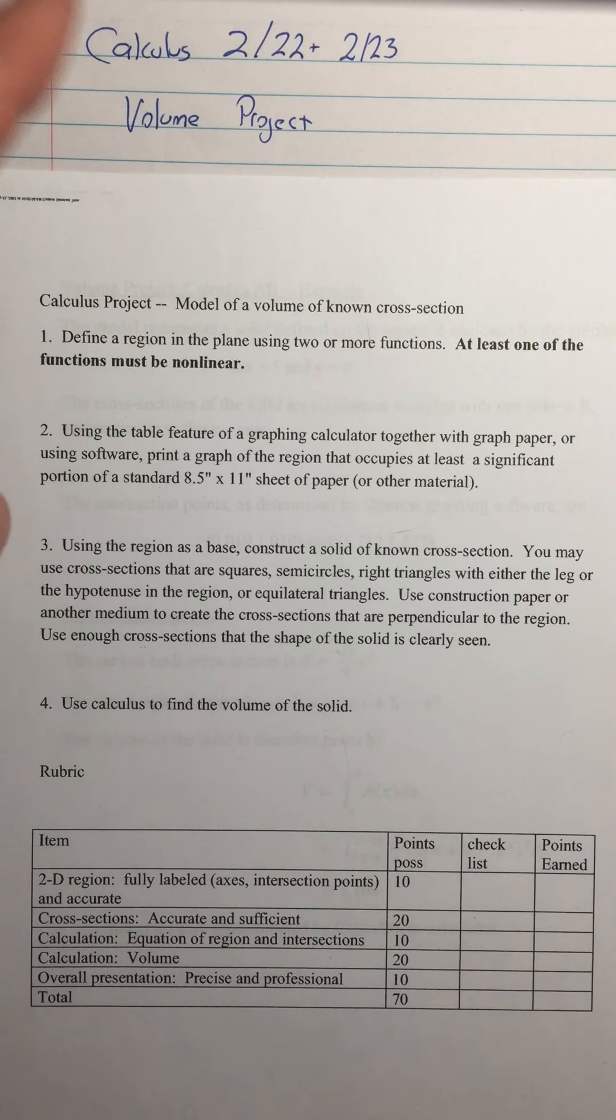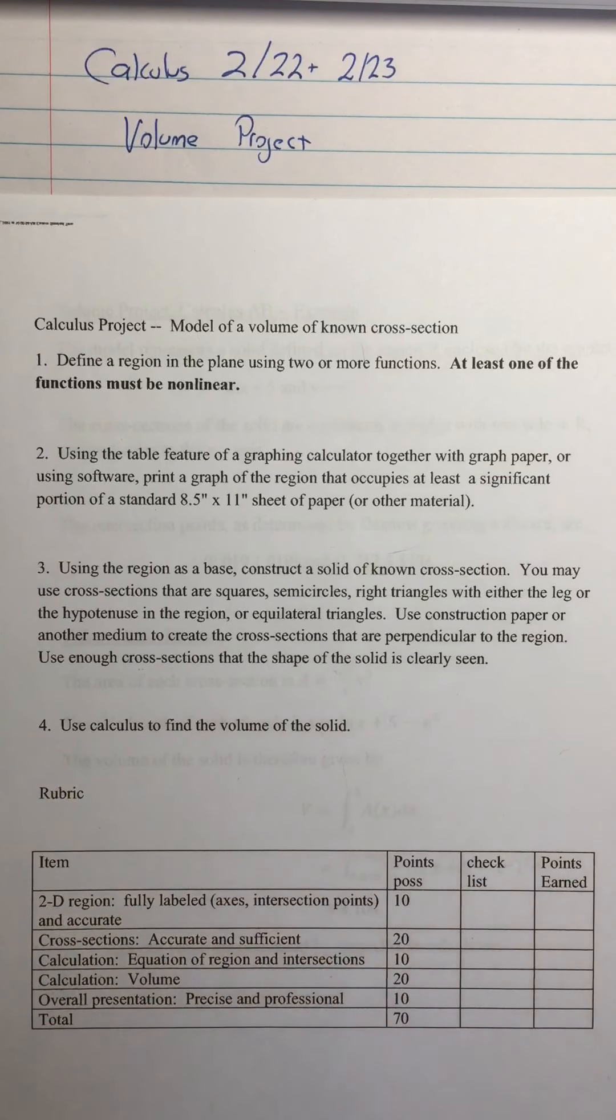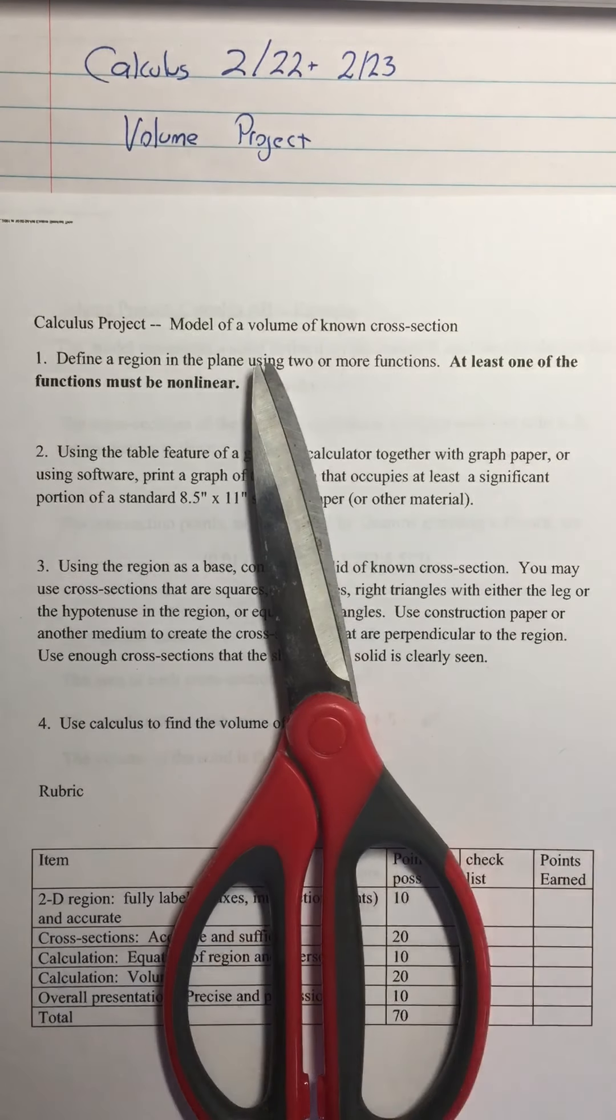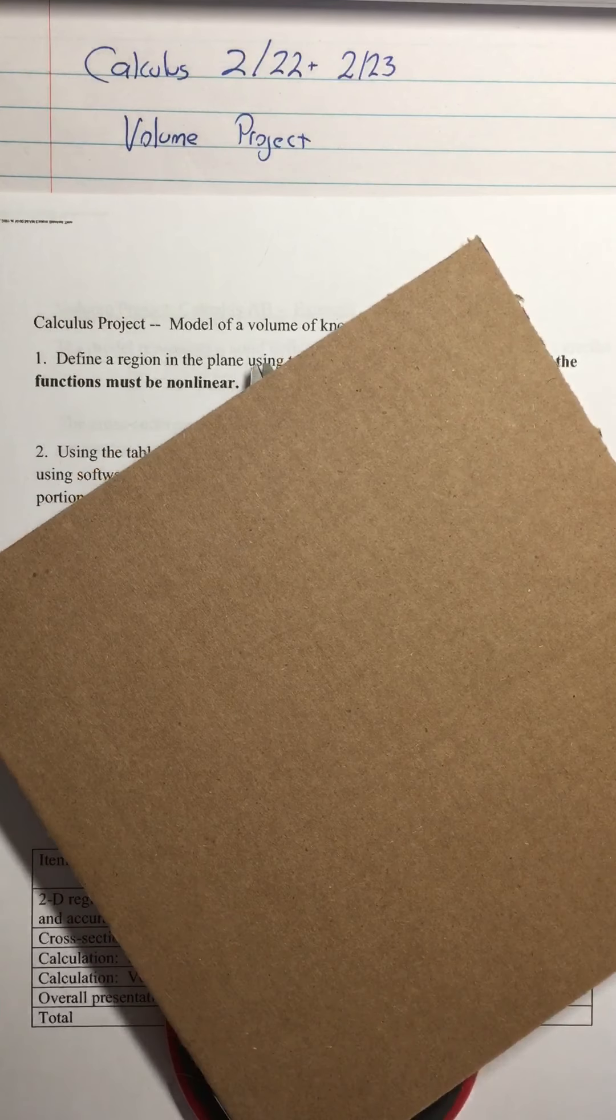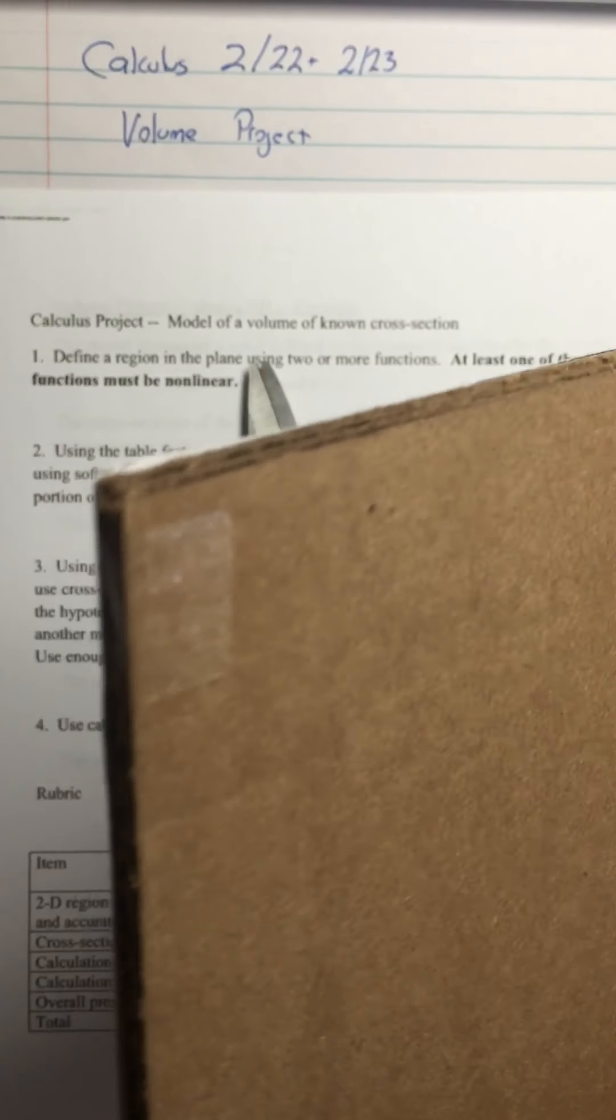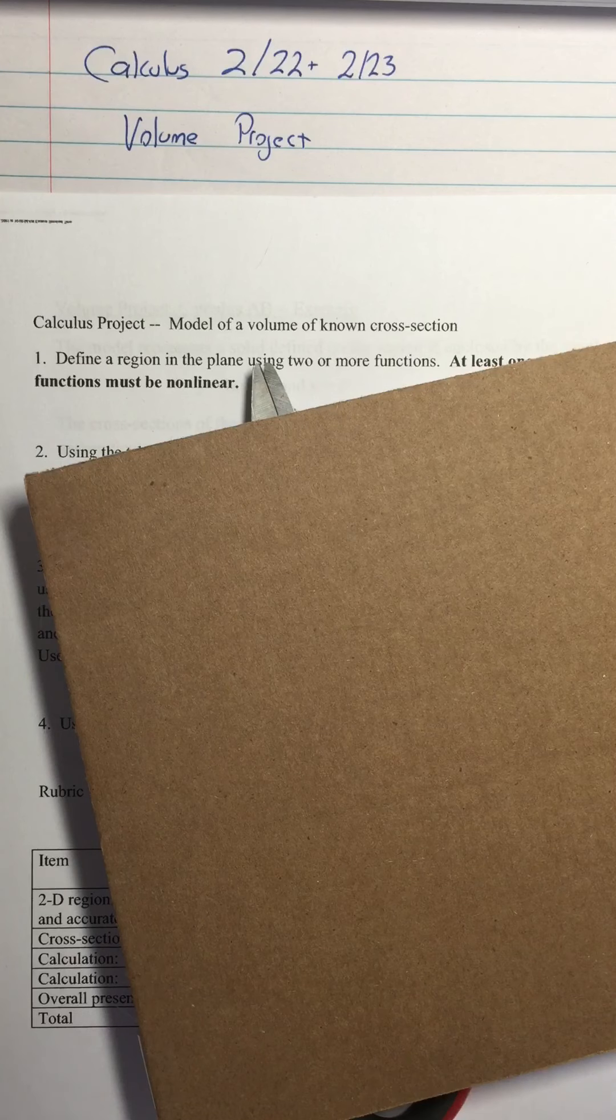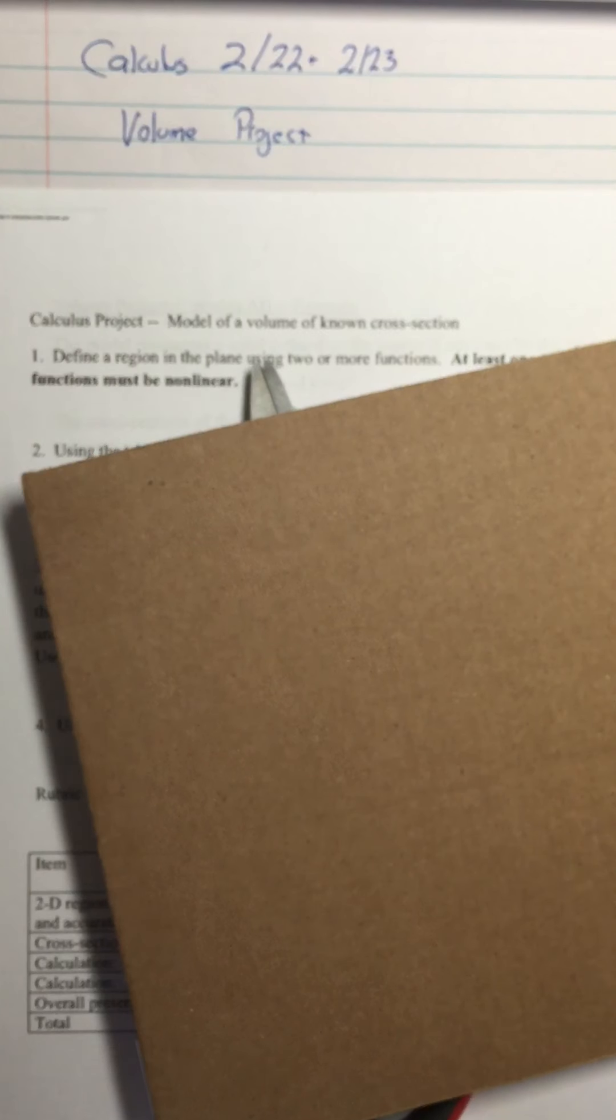Today we are going to do a project. This project is about volumes, so it concludes our work with volumes. You are going to need scissors, a piece of cardboard or other workable material, and some glue or possibly tape.